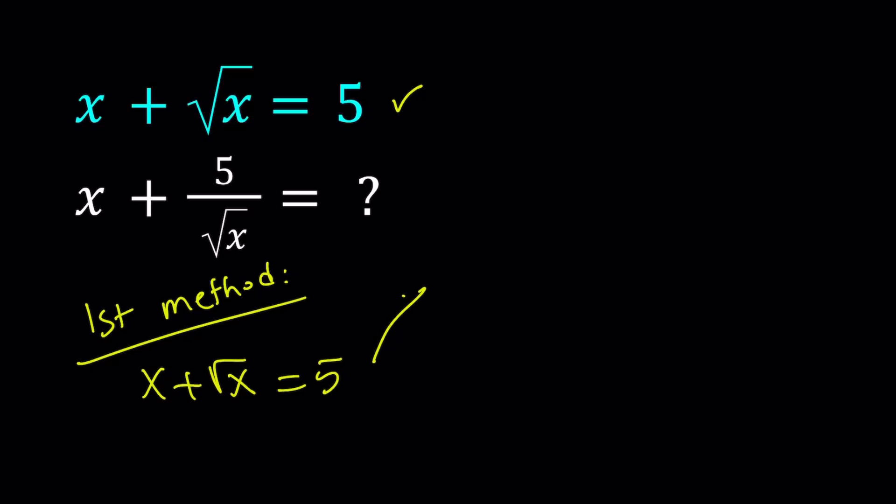For example, one method of solving it would be isolating the square root of x, then squaring both sides, and cleaning up the extraneous solutions if there are any. Obviously, you want x to be a real number, so x must be greater than or equal to 0. It can't be 0 because x equals 0 doesn't work. So you want x to be positive, which means 5 minus x needs to be positive, so x needs to be less than 5.